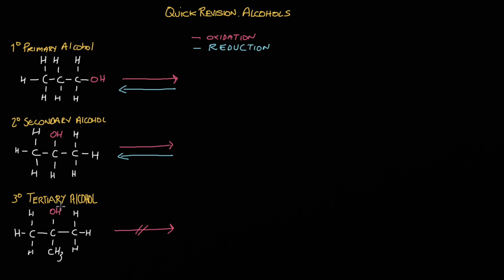Finally, with this tertiary alcohol, here's the OH. It's attached to this carbon here, and this carbon is directly attached to one, two, three carbons, which makes this a tertiary alcohol. A second key learning outcome is the oxidation products of each of these different types of alcohol.